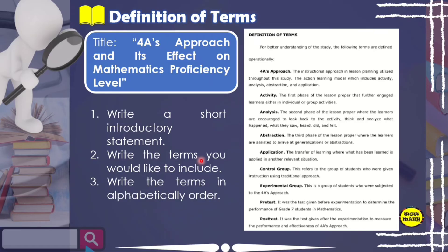Lastly, the definition of terms must be written in alphabetical order — as you can see in the example, the terms are numbered and arranged alphabetically. So writing the definition of terms is easy. Just remember: you don't need to fill it up too much. Include only the terms that are difficult to explain right away — especially the independent and dependent variables of your research, plus other important terms — and arrange them in alphabetical order.